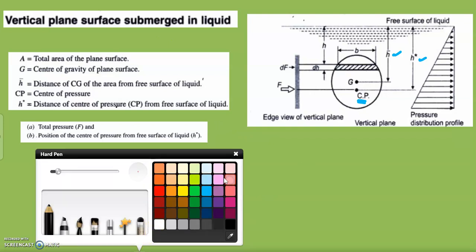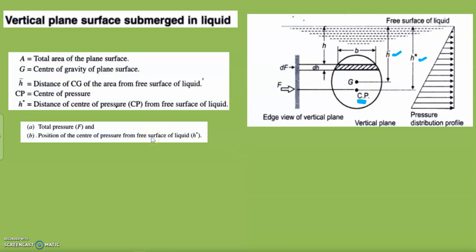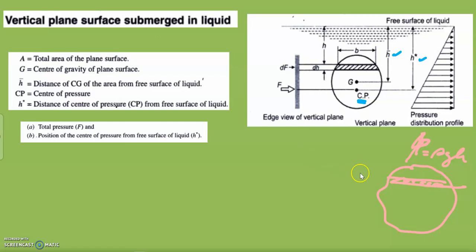Now let's calculate the total pressure in detail. The intensity of pressure is p = ρgh, where h is the distance from the free surface. For the small strip, the pressure intensity is p = ρgh, and the area of the small strip is dA = b·dh.